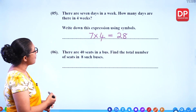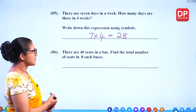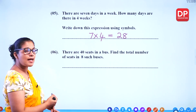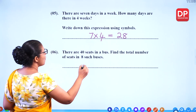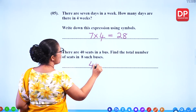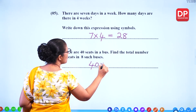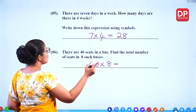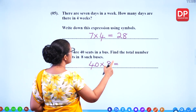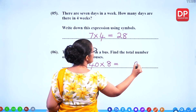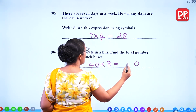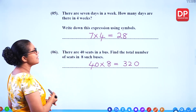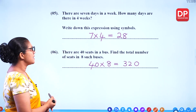There are 40 seats in a bus. Find the total number of seats in 8 such buses. 40 seats in 1 bus, multiplied by 8, gives you the total. 8 times 0 is 0, 8 times 4 is 32, so 320 seats are there.